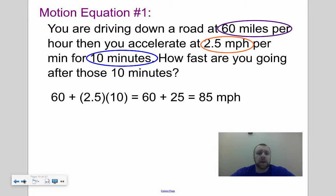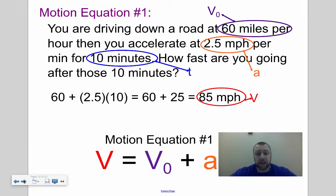I'm going to equate that to the terms we just used. The 60 miles per hour is our initial speed, our V naught. 2.5 miles per hour is our acceleration, and 10 minutes is our time. 85 ends up being our final velocity, or our V. So our motion equation number one is V, our final velocity, equals our initial velocity V naught plus our acceleration times our time. It's a very simple motion equation, but we use this to derive the second one.